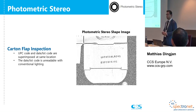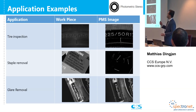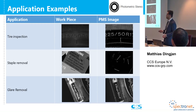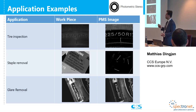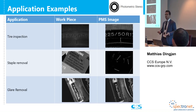Other examples with photometric stereo include tire inspection, which we did with our LSS controller powering four high-powered floodlights of one meter each, triggering them and the camera for easier image acquisition. The code on the tire is clearly visible despite black-on-black surfaces, which is very difficult with traditional machine vision hardware. You can also use it for staple removal — seeing staples without seeing the print — and for glare removal as an alternative to polarization. Other computational imaging techniques include getting a color image from a monochrome sensor or extending depth of field.